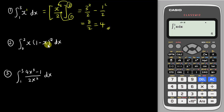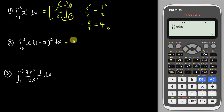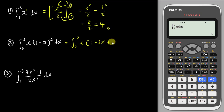For the second question, you cannot integrate straight away because in integration there is no product rule. So we need to expand the bracket first. The limits are from 0 to 2. I still write the integration sign because I haven't started integrating yet — I'm just simplifying. Expanding the bracket gives 1 minus 2x plus x squared.